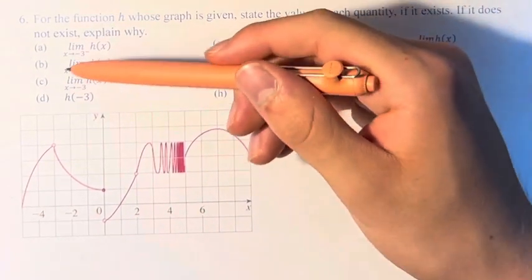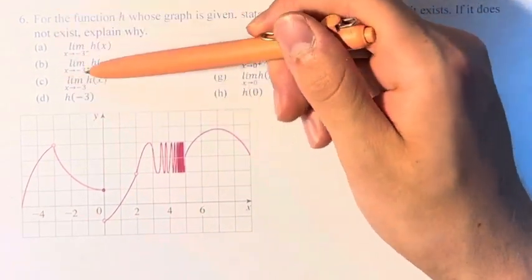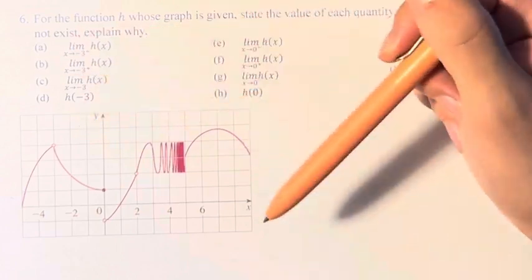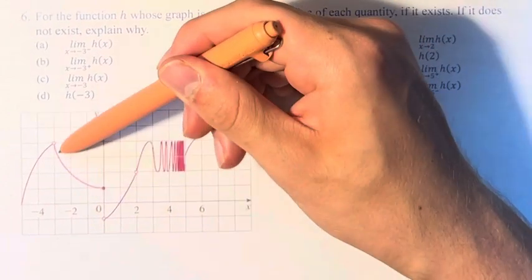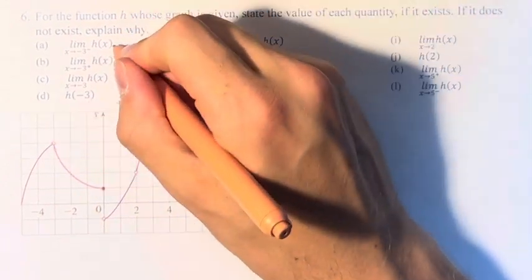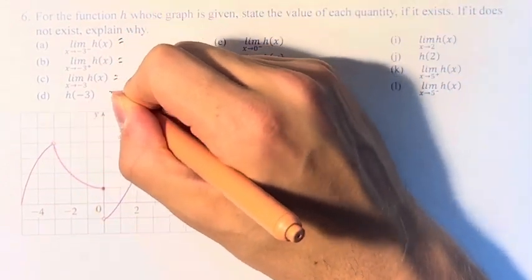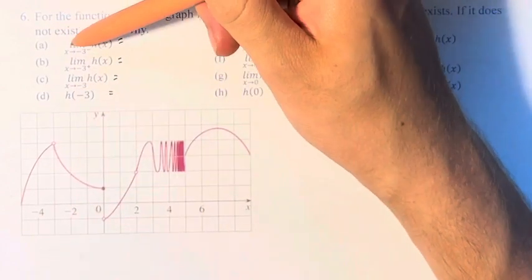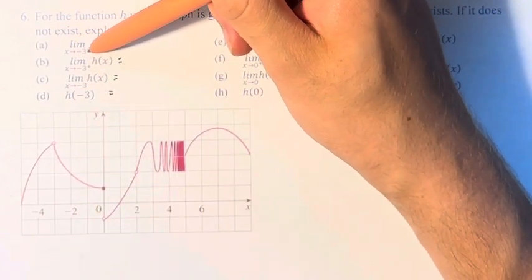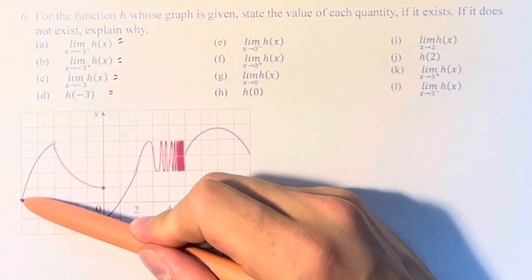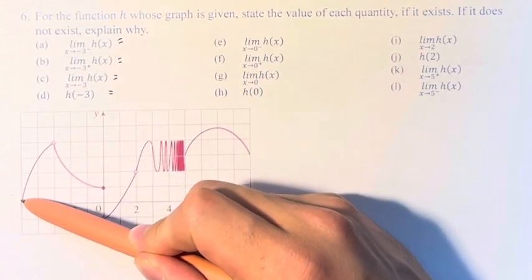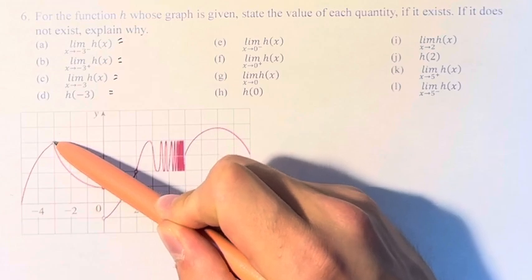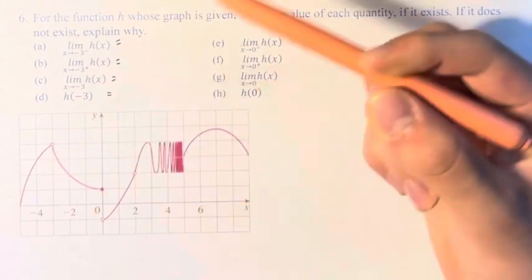So we have first some values regarding x is equal to negative 3. That's these first four. So x is equal to negative 3 is right here, and we see that the function is doing this behavior right there. So let's turn that into limits and values of the function. So the limit as x approaches negative 3 from the left of h of x, well, if we're coming from the left, which is what this minus sign refers to, we're coming here, here, here, and then we're approaching this point. This point has a y value of 4.